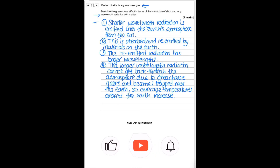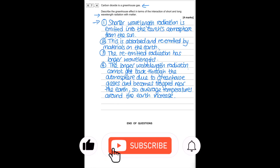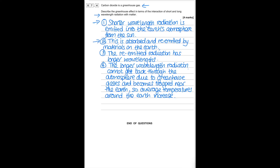Carbon dioxide is a greenhouse gas. Describe the greenhouse effect in terms of interactions of short and long wavelength radiations with matter. Shorter wavelength radiation from the sun enters the earth's atmosphere and is absorbed and re-emitted by materials on the earth as longer wavelength radiation. These longer wavelength radiations cannot pass back through the atmosphere due to greenhouse gases and become trapped near the earth, so the average temperature increases.